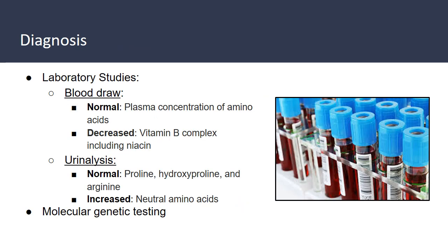Upon suspicion of Hartnup disease, the first test ordered will be a urinalysis to measure the amount of amino acids excreted in the urine. High levels of neutral amino acids in the urine may indicate Hartnup disease. A blood test will also be ordered to check levels of vitamin B complex, including niacin, as patients with Hartnup disease often have a niacin deficiency. Plasma levels of amino acids may remain normal. In certain patients, molecular genetic testing may be appropriate to confirm the diagnosis.